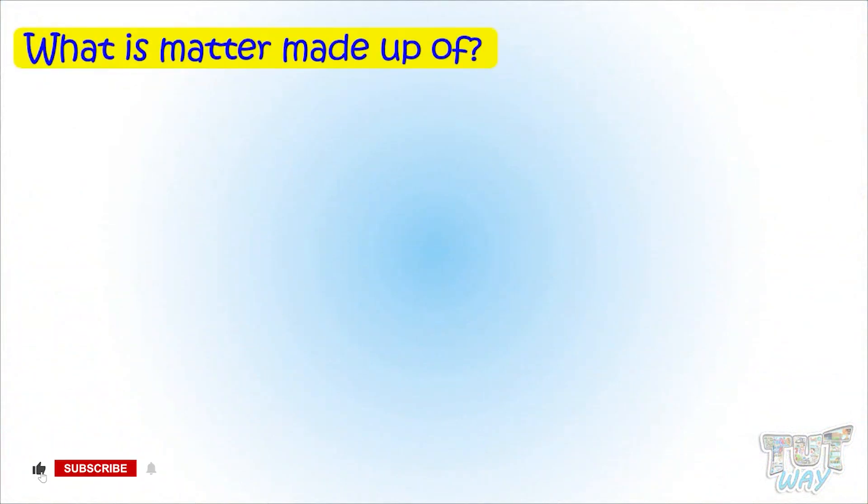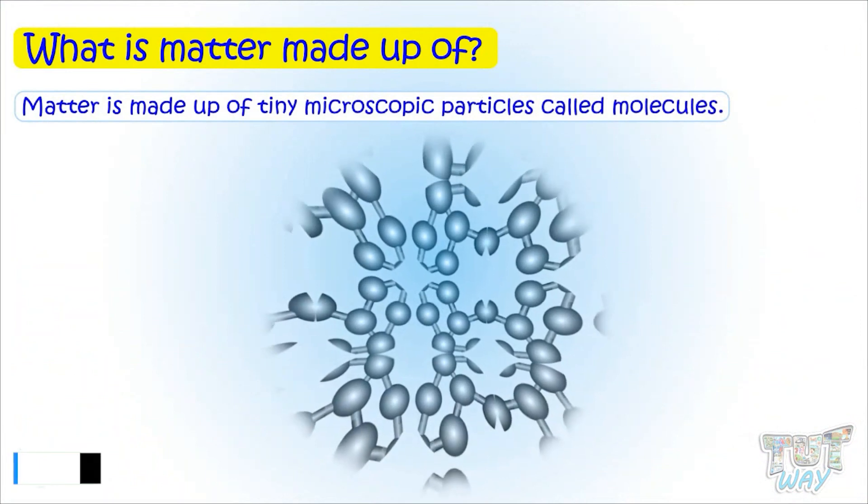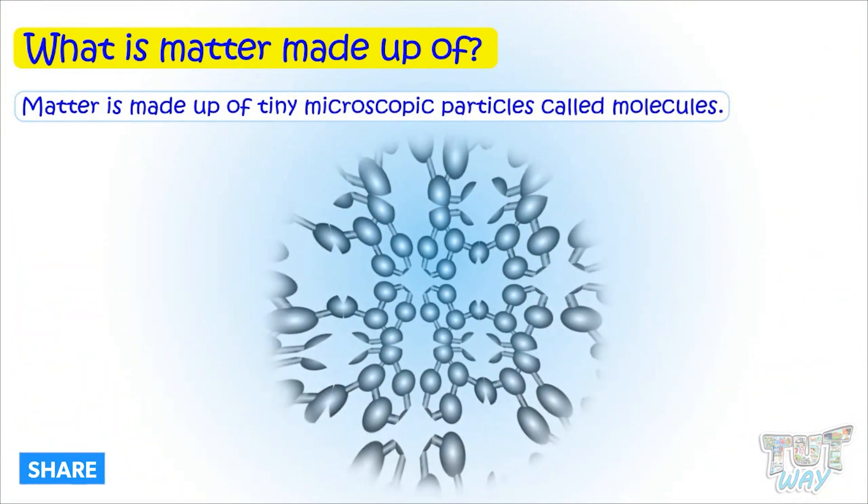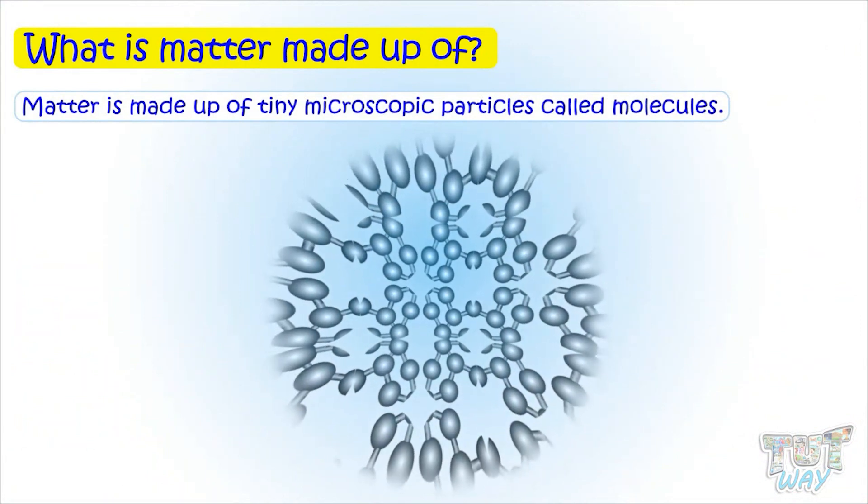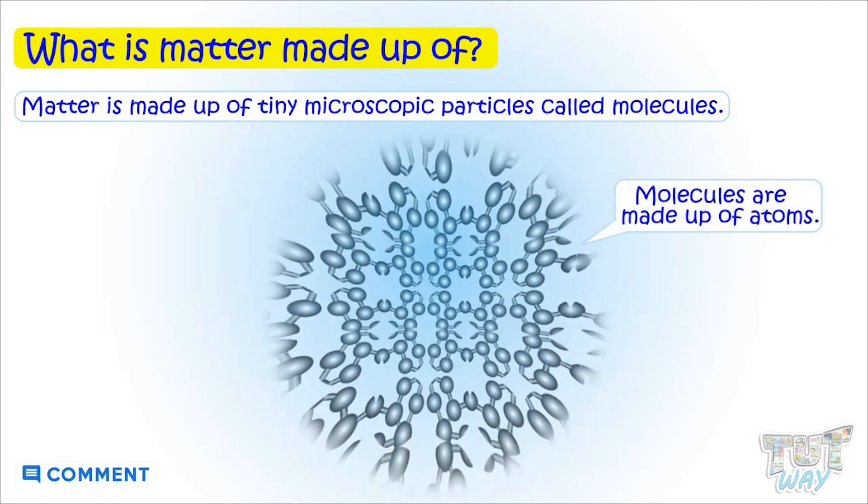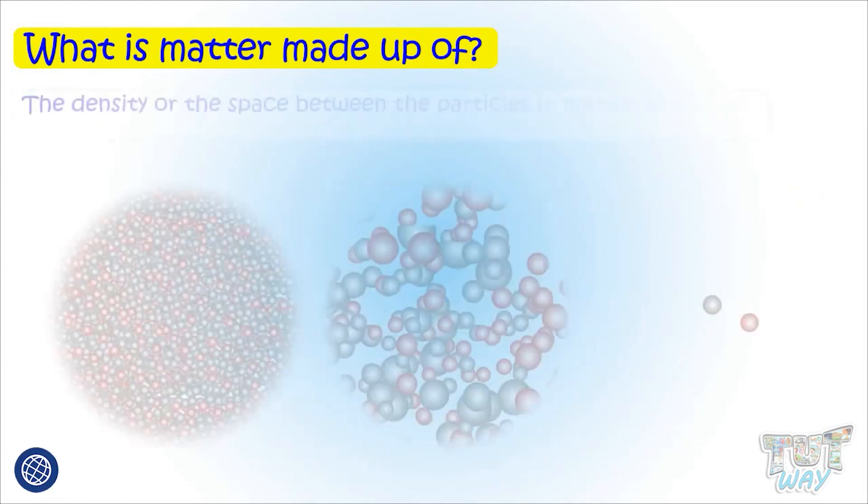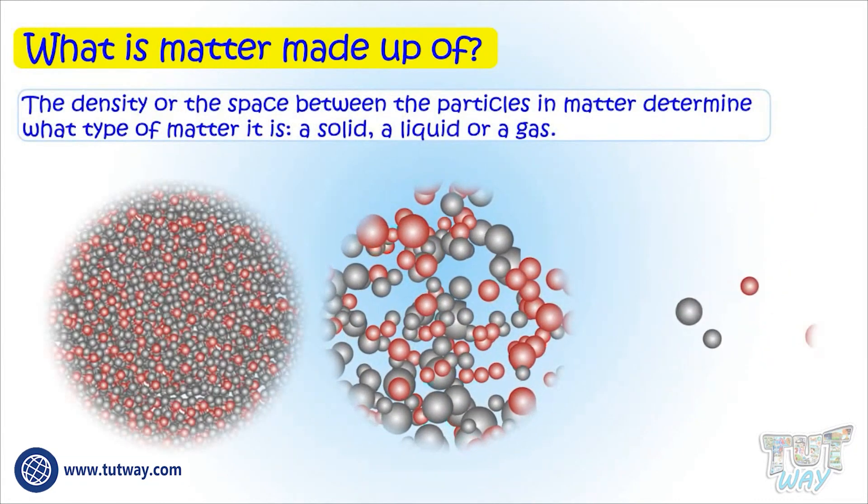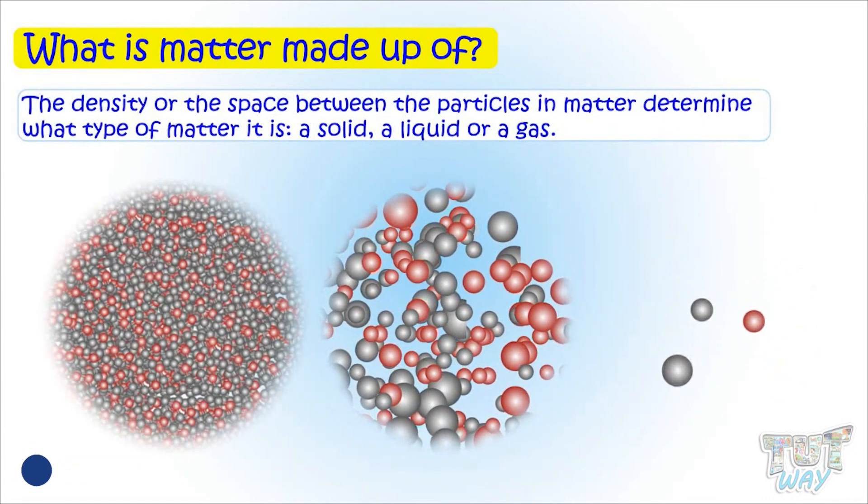What is matter made up of? Matter is made up of tiny microscopic particles called molecules, and molecules are made up of atoms. The density and the space between particles of matter determine what type of matter it is.